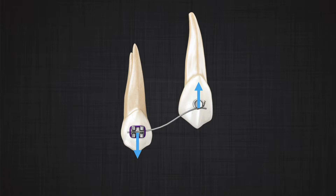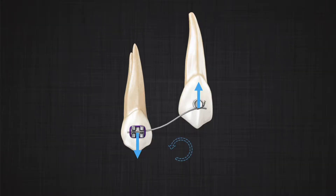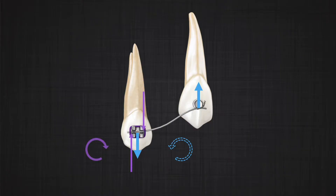Something interesting happens here. Looking at the blue arrows, there are two forces equal in magnitude, opposite in direction, separated by a distance — these define a couple, which should cause rotation. In this case, the rotation of the wire would be counterclockwise. But the wire doesn't rotate, so there must be another couple in the system. That couple is represented by the purple arrows at the corners of the bracket, which produce a clockwise moment that cancels the counterclockwise moment from the blue arrows. Now the wire is in equilibrium.